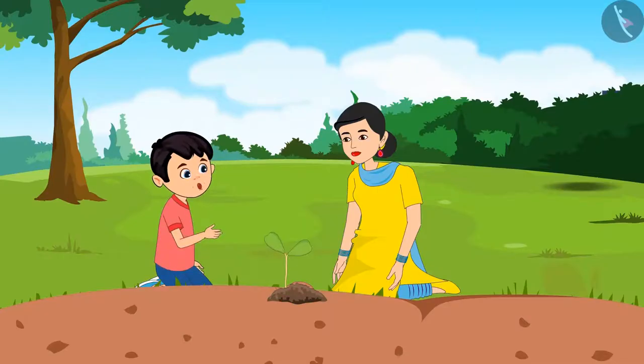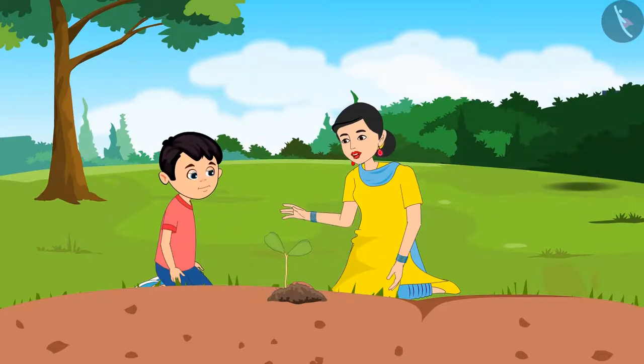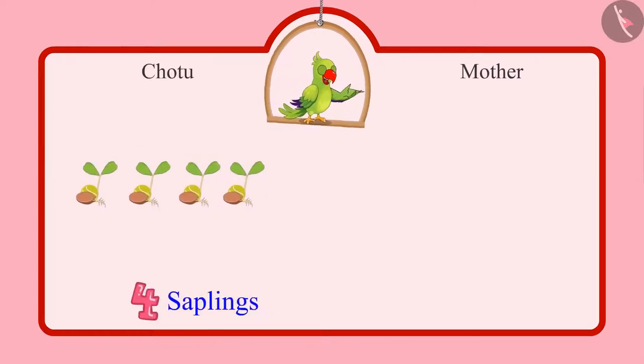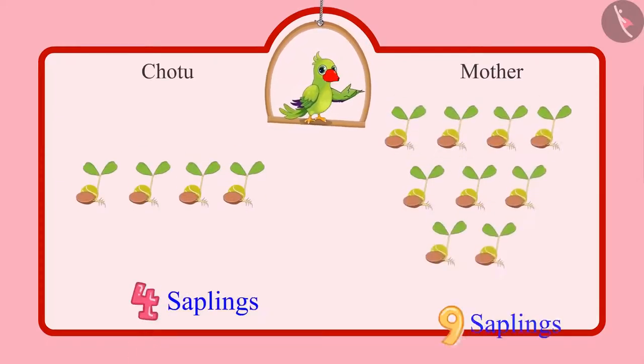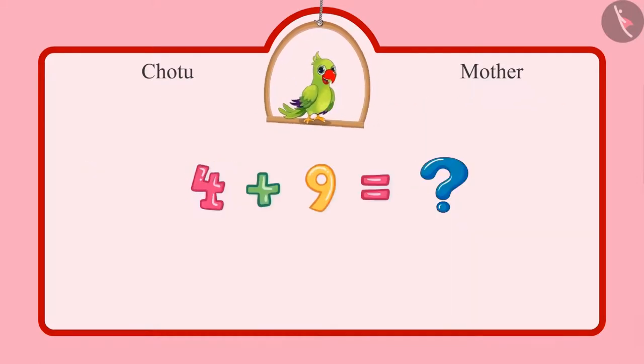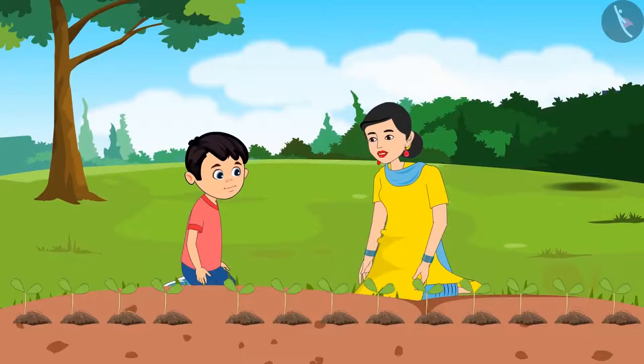Chotu planted four saplings. Mother planted nine saplings. Can you tell me how many saplings in all did they both plant? Let us see. Chotu, can you count and tell me how many saplings we have planted?